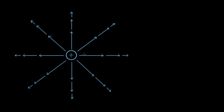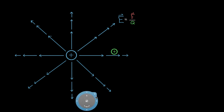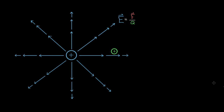We know that electric charges create electric fields, and we know the definition of the electric field is the amount of force per charge. What charge? Some charge that finds its way into this region. Let's say this charge right here. So if we took the force on this charge, let's call this Q2, divided by Q2, that would be the electric field at that point in space.